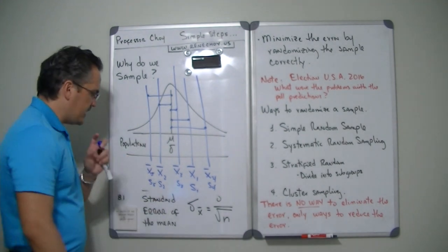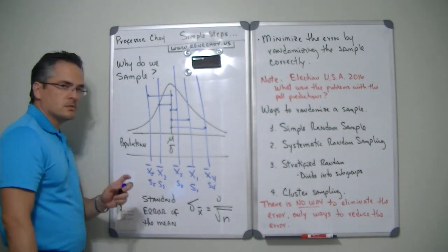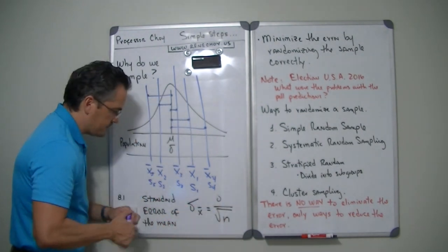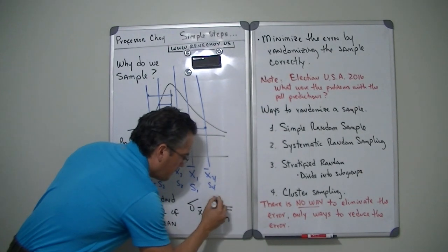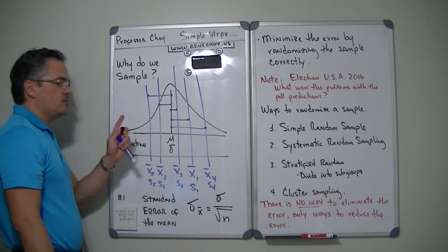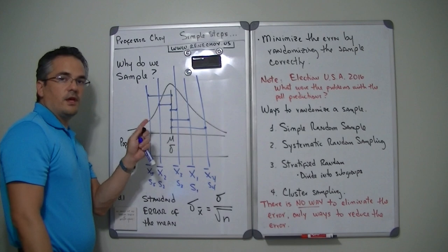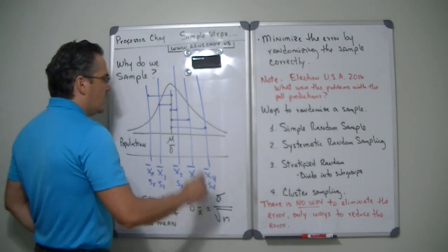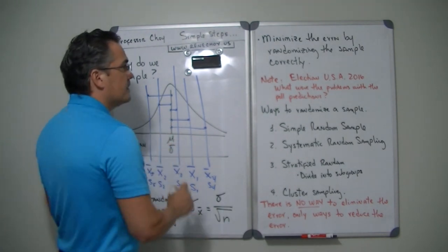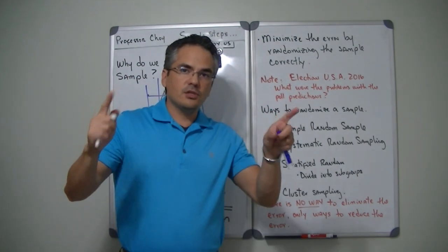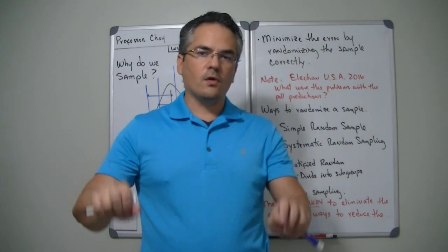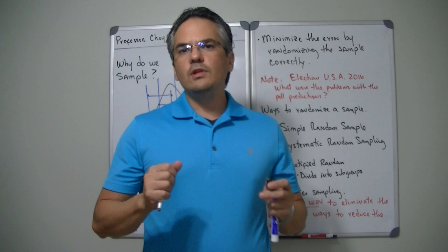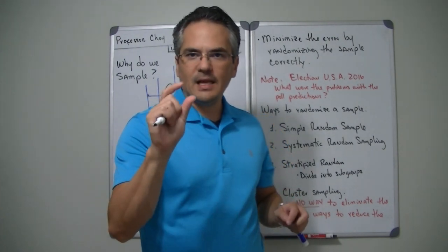You need to understand that every time you sample, there's going to be an error. There's always a difference between your population information — the truth or reality — and your sample. You need to basically try to minimize that error.